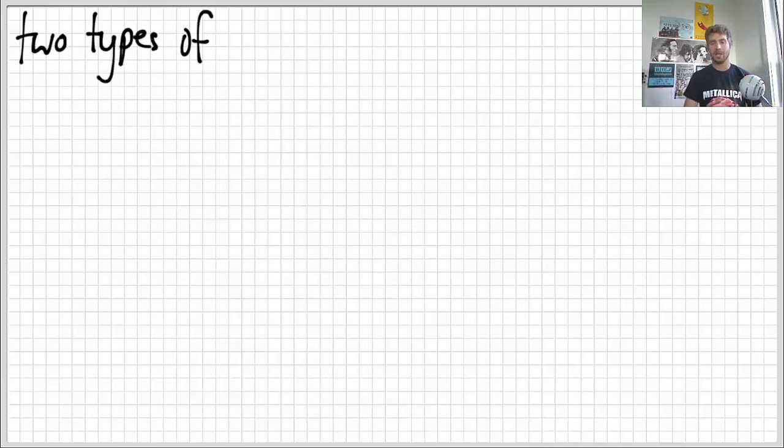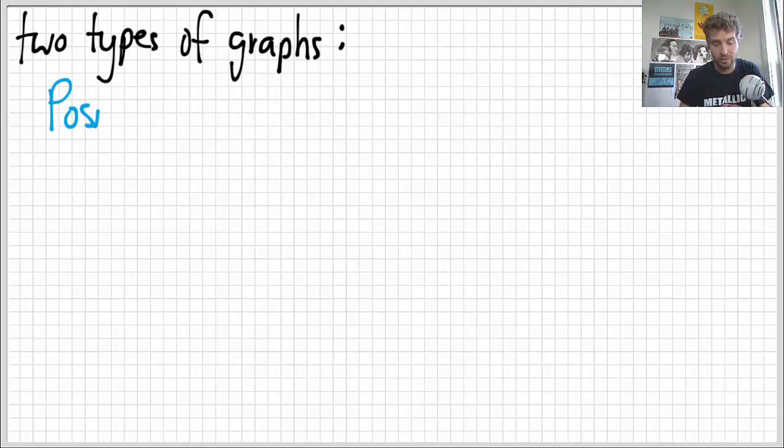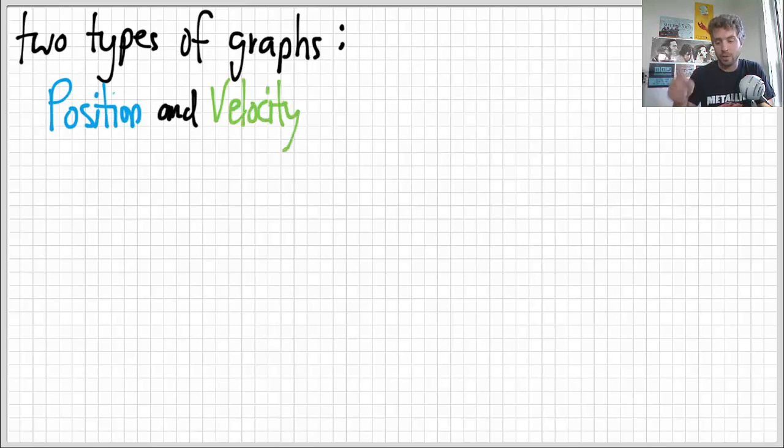There are two types of graphs that we're going to look at in this video. There is the position graphs and the velocity graphs. We are going to start with position graphs.